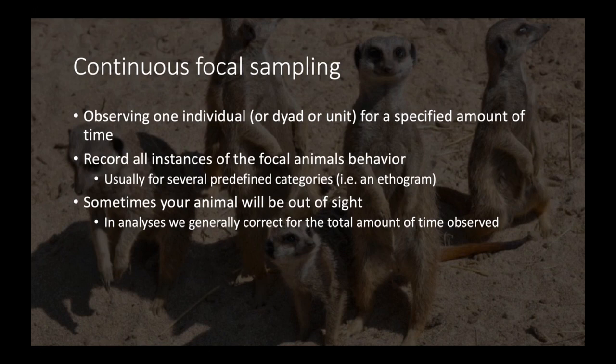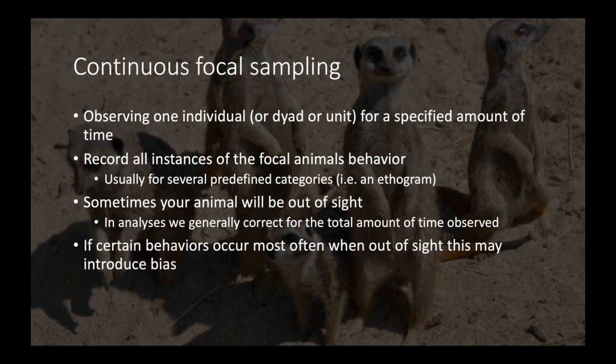Generally we will correct for the total amount of time observed. For our example, we are watching Bumble for 600 seconds, so if she was out of sight for 100 seconds, then all of our analyses would be corrected to look at the behaviors that occurred within the 500-second range. This is true not just of focal sampling but all behavioral sampling that relies on a human observer.